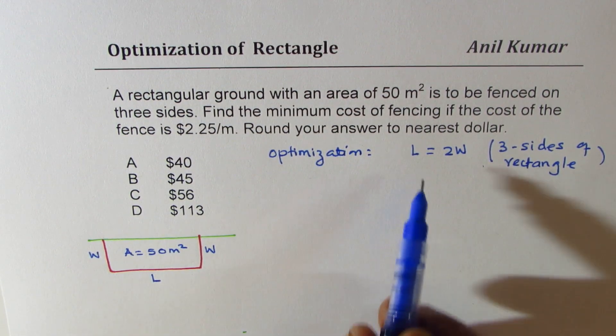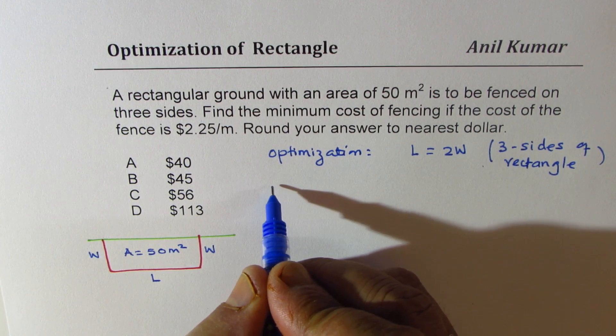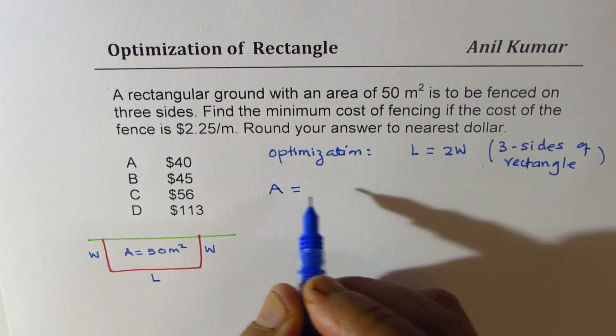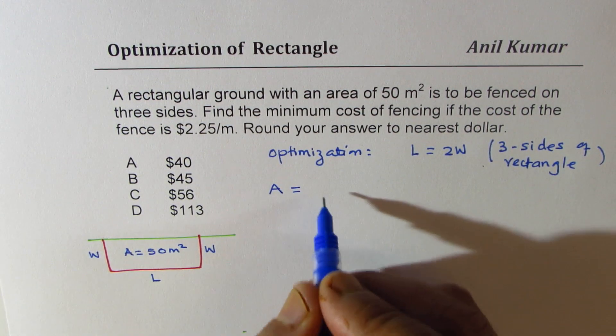So if length is twice width, in that case, we know what area is. Area is length times width.